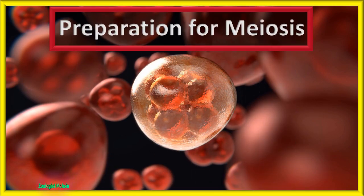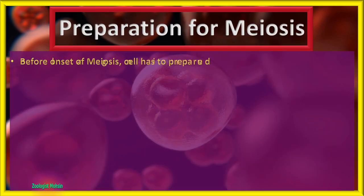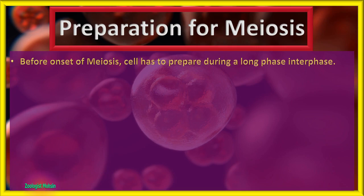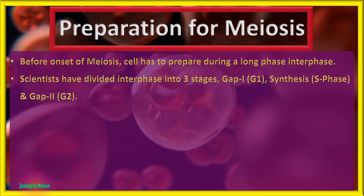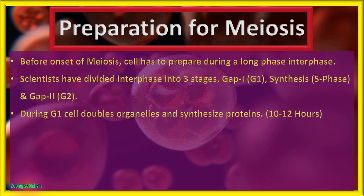Preparation for meiosis: before the onset of meiosis, the cell has to prepare during a long phase called interphase. Scientists have divided interphase into three stages: Gap 1 or G1, Synthesis or S phase, and Gap 2 or G2. During G1, the cell doubles its organelles and synthesizes proteins. It takes almost 10 to 12 hours out of 24 hours.